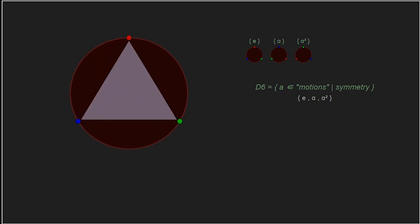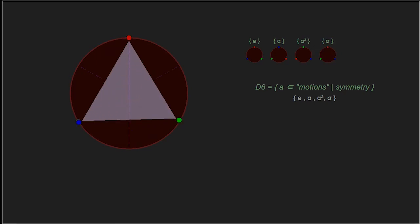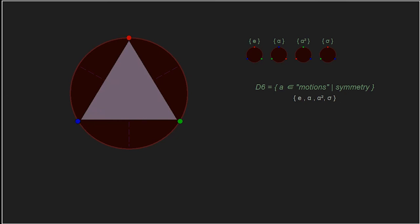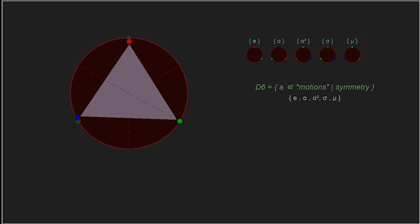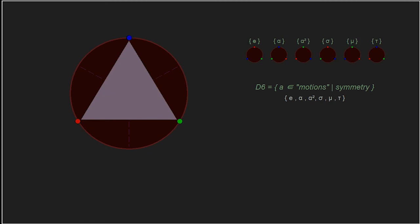Now let's look at the reflections. We can draw an axis to the top vertex and the midpoint of the bottom line — a vertical or 90-degree axis. We can also draw an axis from the lower-left vertex to the upper-right at a 30-degree angle, and from the lower-right vertex to the upper-left at a 150-degree angle. Our fourth element is reflecting the triangle across the 90-degree axis; let's call that sigma — doing sigma twice returns us to the identity. The fifth element is reflecting across the 30-degree axis; let's call that mu — doing mu twice also returns the identity. The sixth element is reflecting across the 150-degree axis; let's call that tau — doing tau twice also returns the identity.